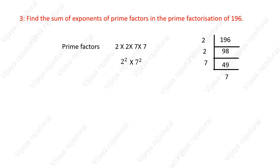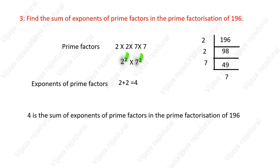So the sum of exponents of prime factors in the prime factorization of 196 is 2 plus 2, which equals 4. So 4 is the answer.